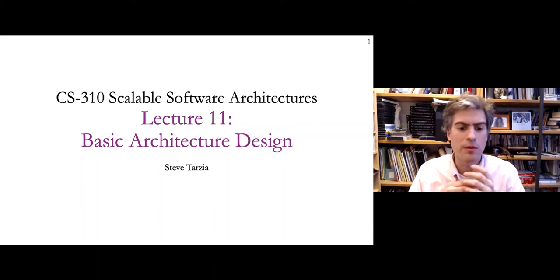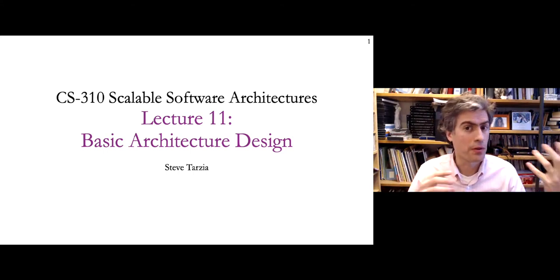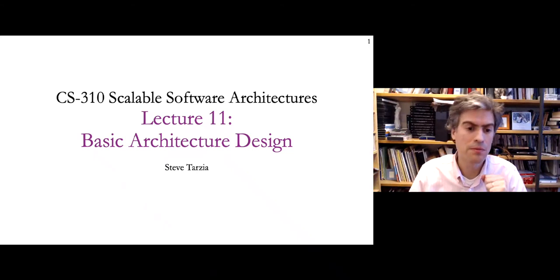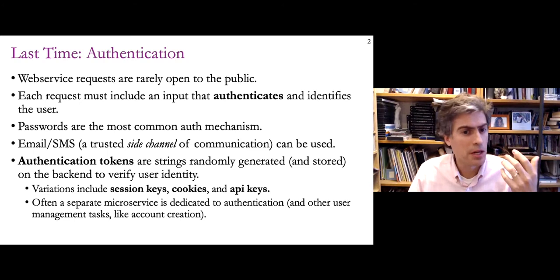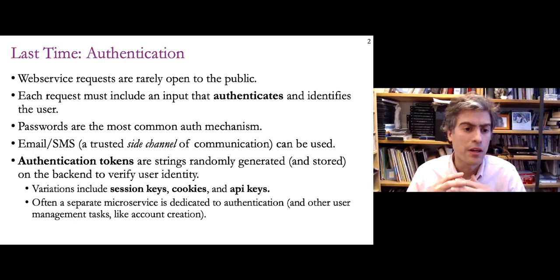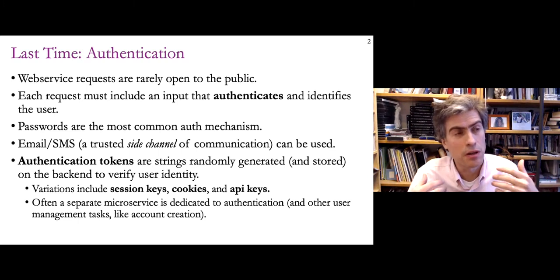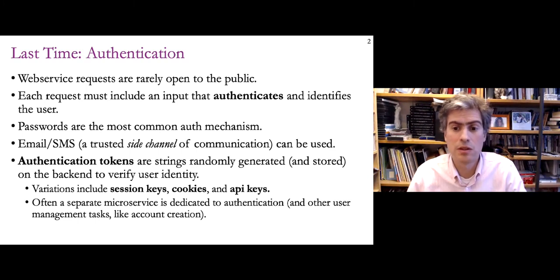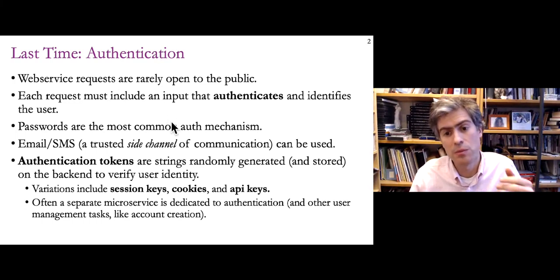Hello, everyone. In this next lecture, I'm going to go through an extended architecture design example and go through more detail than I went through earlier with the Wikipedia example. First, let's review what we talked about last time. The topic was authentication, and the purpose of authentication is to allow a service to handle requests, treating those requests differently depending on who they're coming from — to recognize who the request is coming from, provide customized responses, and protect private data.